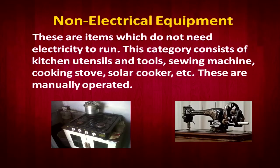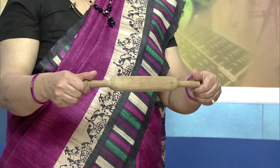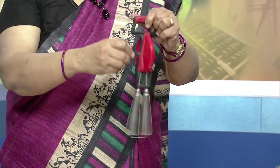Similarly, the blower requires to be plugged into a socket so that electrical supply can be provided to it. Now moving to non-electrical equipment — kitchen utensils that everybody knows about, such as a knife, sieve, rolling pin, and grater.